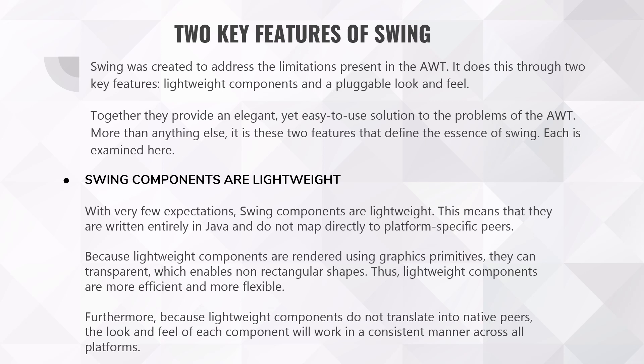The first key feature is that Swing components are lightweight. With very few exceptions, Swing components are written entirely in Java and do not map directly to platform-specific peers. Because lightweight components are rendered using graphic primitives, they can be transparent, which enables non-rectangular shapes. Thus, lightweight components are more efficient and more flexible. Furthermore, because lightweight components do not translate into native peers, the look and feel of each component works in a consistent manner across all platforms. In short, Swing uses a very good graphic interface — it enables new graphical features, clearer and crisper abstract graphics, and transparency makes it look smoother and cleaner. And since it is platform independent, the graphics work the same on all platforms.